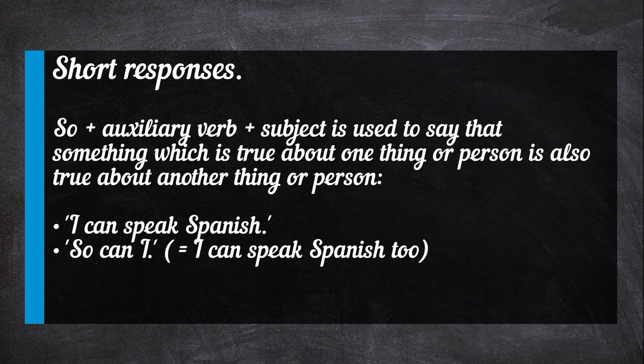So plus auxiliary verb plus subject is used to say that something which is true about one thing or person is also true about another thing or person. For example: I can speak Spanish. So can I — equals: I can speak Spanish too.